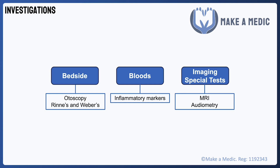An MRI scan will often be needed to rule out sinister causes of hearing loss, such as tumours. Audiometry is a special test which assesses the patient's ability to hear different volumes and pitches. Rinne's and Weber's tests and audiometry will be the most useful for distinguishing between conductive and sensorineural hearing loss, and we'll now look at these in more detail.